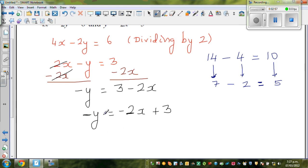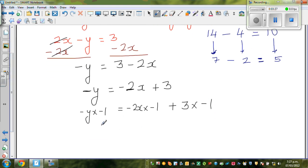I'm going to multiply the whole thing by negative 1. So negative y times negative 1 is equal to negative 2x times negative 1 plus 3 times negative 1. So y equals 2x minus 3.